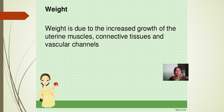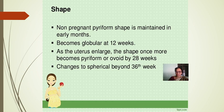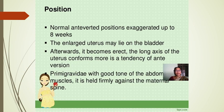The weight increase is due to growth of uterine muscles, connective tissues, and vascular channels. The shape of the uterus changes from piriform in the non-pregnant state to globular at 12 weeks, then piriform again as it enlarges, and spherical beyond 36 weeks. Position: normal anteverted position is exaggerated up to 8 weeks, then the uterus becomes erect, with a tendency toward anteversion, held against the maternal spine by good abdominal muscle tone.